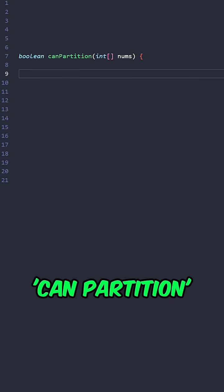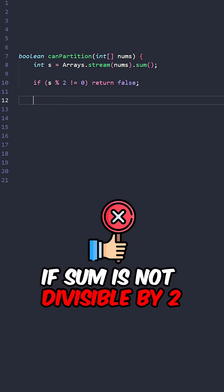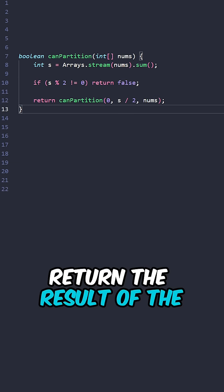Let's implement the function canPartition taking the input array. Calculate the sum of all of the elements. If sum is not divisible by 2, return false. Return the result of the helper method.